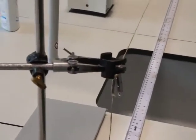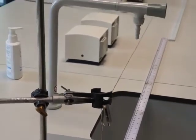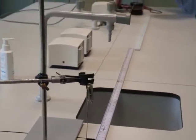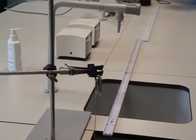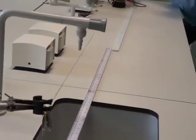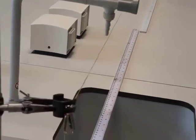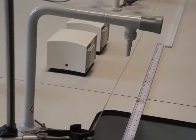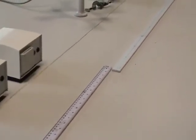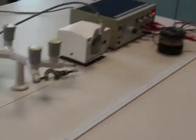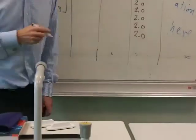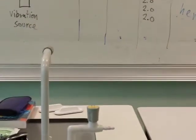If I come back over here to the signal generator, let's see what frequency gives good vibration on the string. That's vibrating up and down quite nicely. The frequency, according to the signal generator, is 13.5 hertz. So let me put that up on the board: a frequency of 13.5 hertz for a tension of 1 newton.